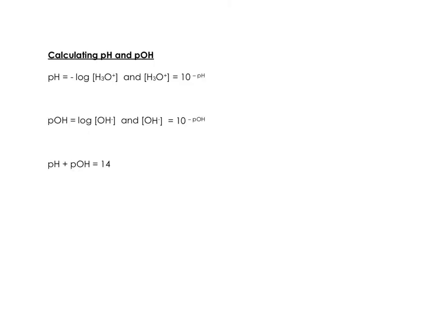Calculating pH and pOH. pH is the negative log of the hydrogen ion concentration, or the hydronium ion. The H3O⁺ ion concentration can be found if you do 10 to the negative pH, or the inverse log of the negative pH.